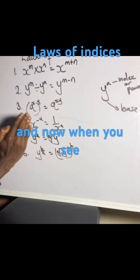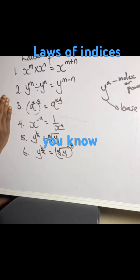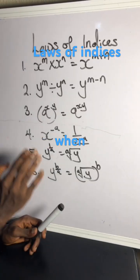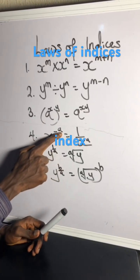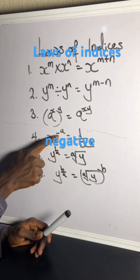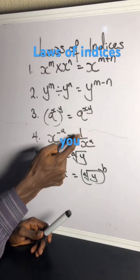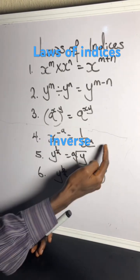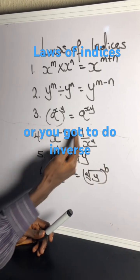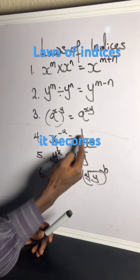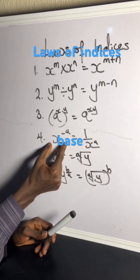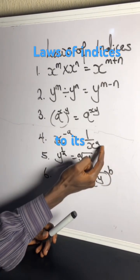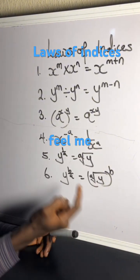When you see a negative index, the negative sign means inverse — you gotta do the inverse. It becomes one over the base to its power.